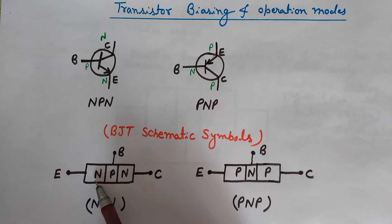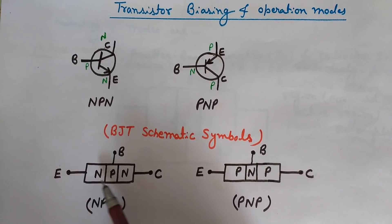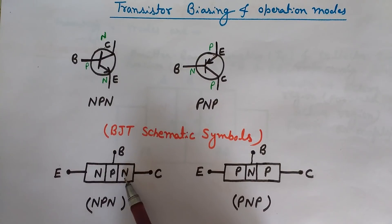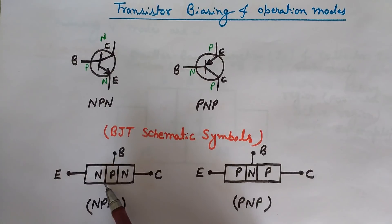The collector region is moderately doped and the base is lightly doped. This is because we want a large number of electrons emitted from the emitter, and we want the smallest number of electrons to recombine in the P-type base region in NPN, so that maximum electrons reach the collector. Also, the size of the collector region is largest so it can collect a large number of electrons, and the base is made smallest to minimize recombination.